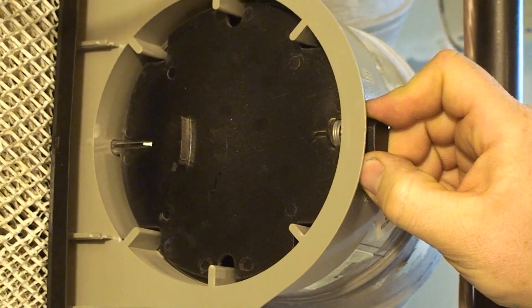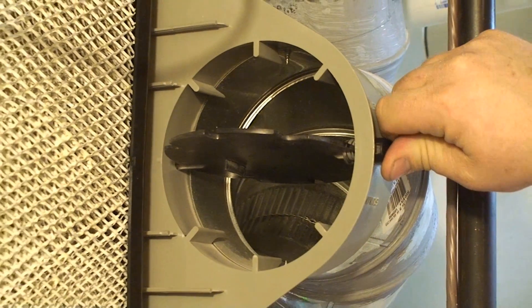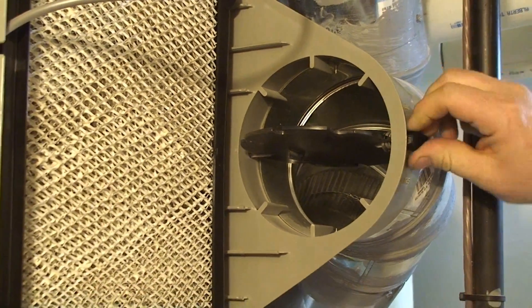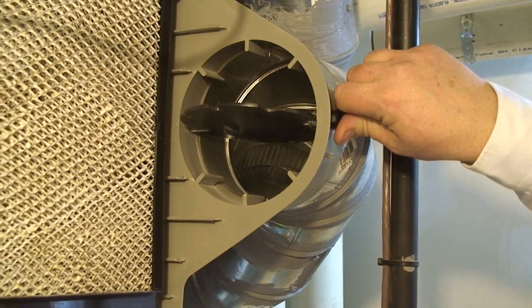On the Trane 300 bypass flow-through humidifier, we have a damper that's built into the unit. Most humidifiers have a damper built into the unit, and there's some confusion as to what the damper's for and how it should be set.